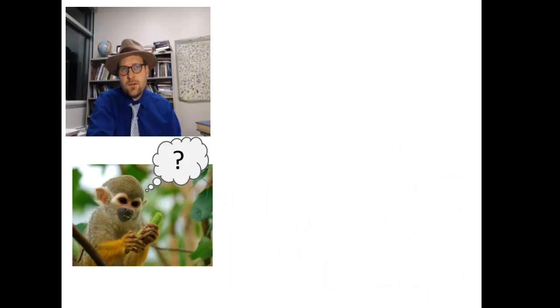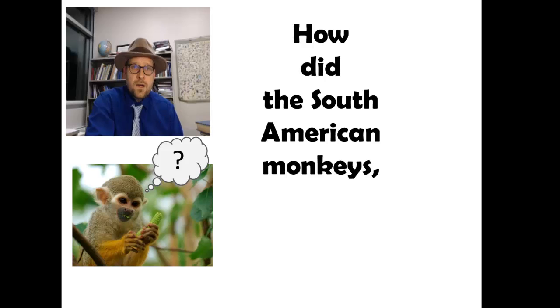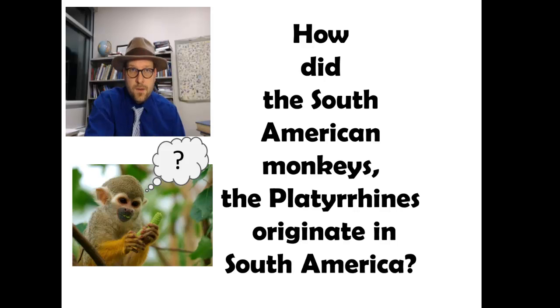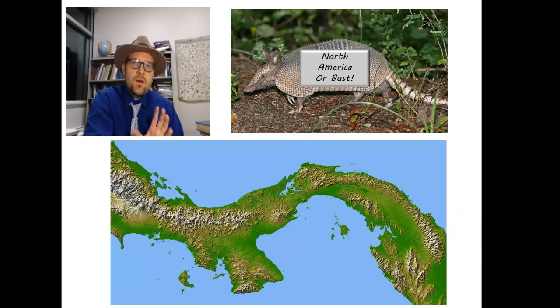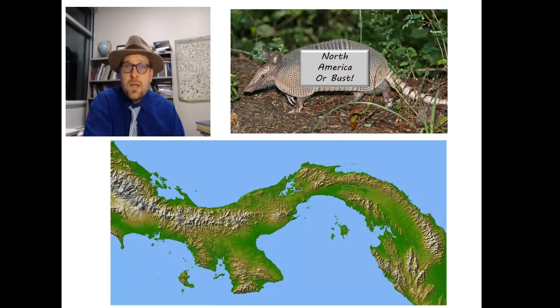But the question paleontologists have been asking for centuries is how did the South American monkeys, Platyrines, originate in South America? South America was split off from North America throughout most of the last 66 million years. There is some evidence of a possible connection during the age of the dinosaurs, but throughout most of the Cenozoic, South and North America were separated by an ocean. The Isthmus of Panama formed only around 3 million years ago. This land bridge allowed for the first time in 66 million years an exchange of animals between the continents.